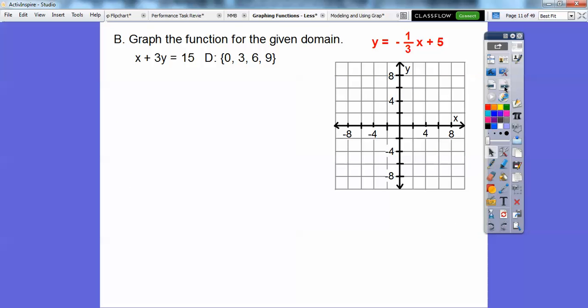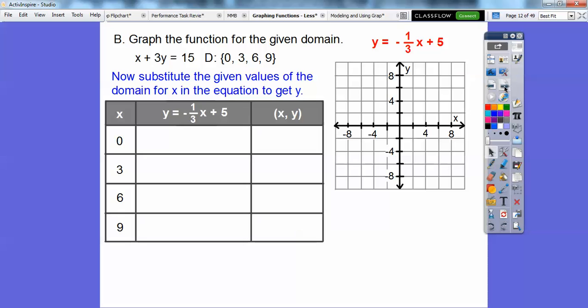Now we're going to plug in these domain values for x: 0, 3, 6, 9. Let's set up a chart. We're just going to substitute in x equals 0, x equals 3, 6, and 9. Notice how these are nice multiples of 3.